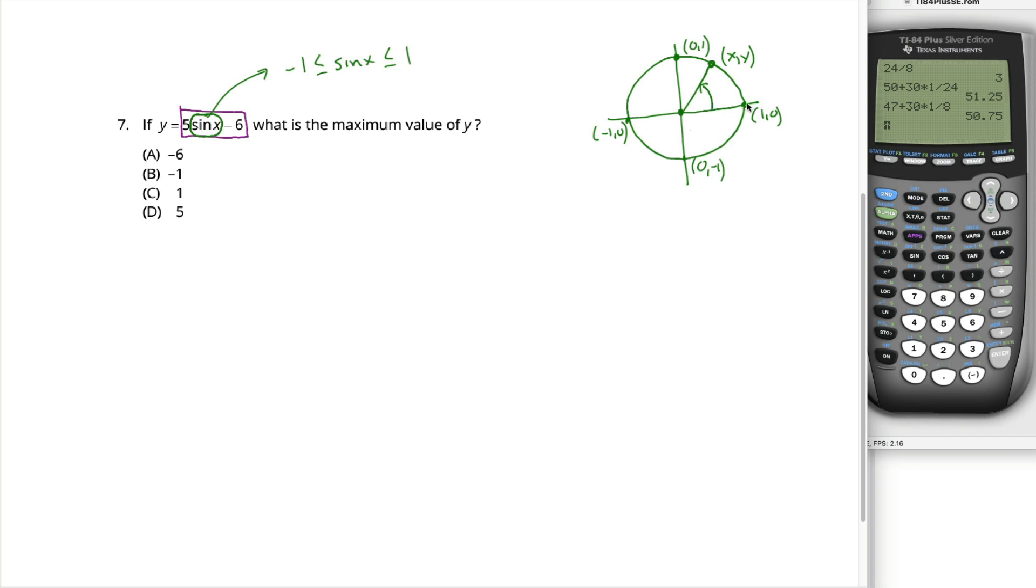The height of the point never gets higher than it is right here or lower than it is right here. The x-coordinate, the left and right of the point, never gets further to the right than it gets here or further to the left than it gets there. Anyways, if you're comfortable with all that, answering this question is fairly easy.